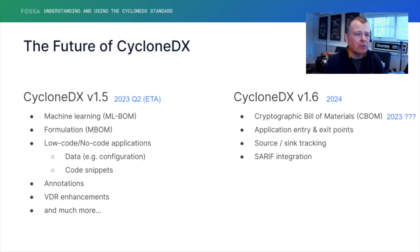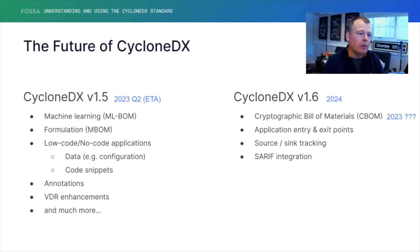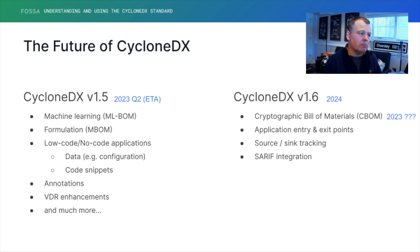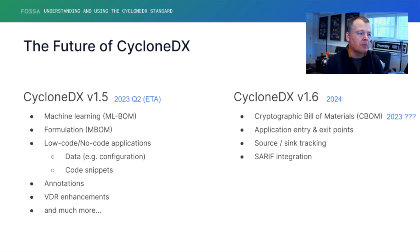Formulation, or a manufacturing bill of materials, is the concept of how something was built — whether it's software, whether it's an IoT toaster, or how a service was deployed. What is the formula for making that thing a thing? That support is also coming in 1.5.